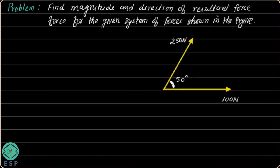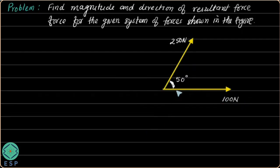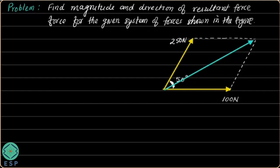We have a problem: find the magnitude and direction of the resultant force for a given system of forces. We have two forces — 100 Newton and 250 Newton — with an angle of 50 degrees between them. Applying the parallelogram law, we draw the diagonal FR, which represents the resultant. The angle alpha shows the direction of the resultant force.